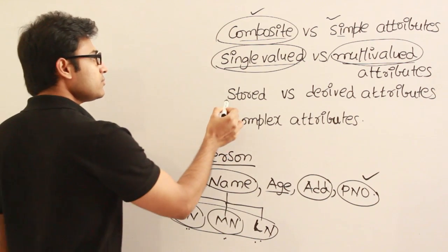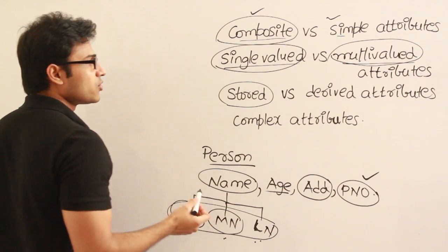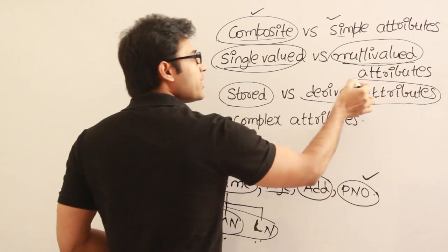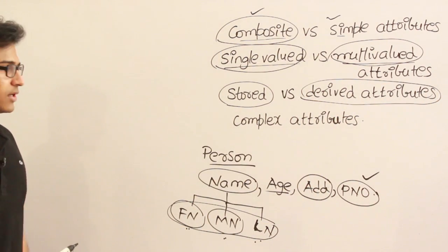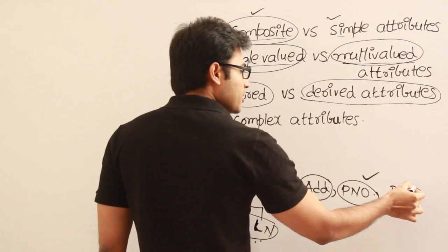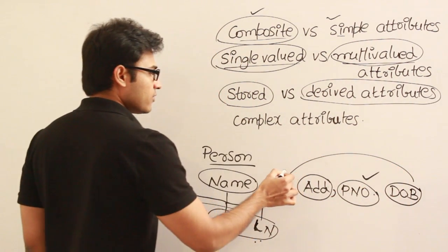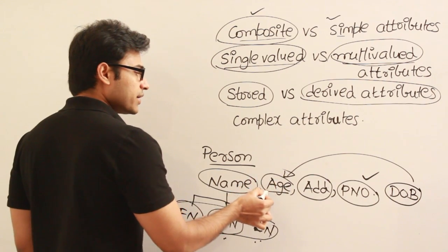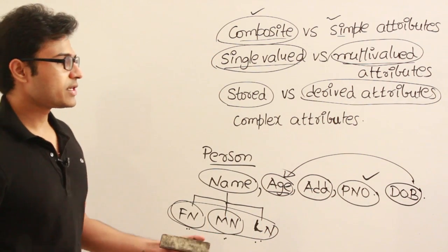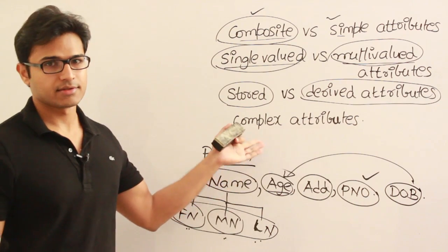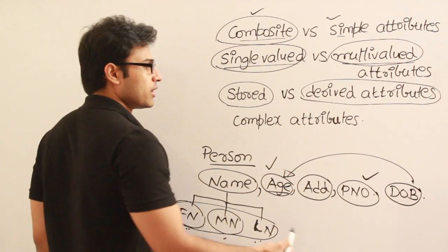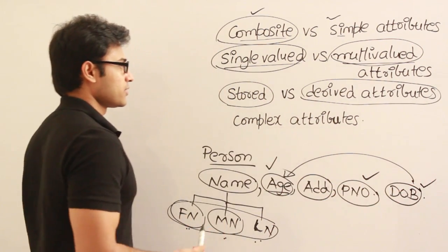Stored and derived attributes: we store some information in our system, and others we don't store — whenever they are required, we derive them. For example, we can store date of birth, and depending on the date of birth, we can derive age. Therefore, we need not store age. We just store date of birth, and whenever required, depending on the present date and date of birth, we derive the age. So age can be a derived attribute, and date of birth is a stored attribute.